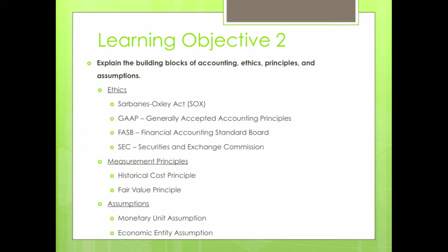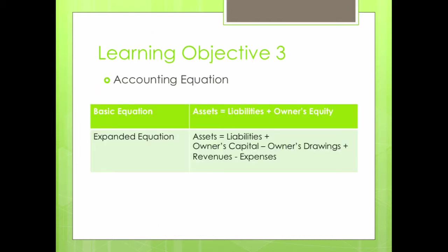The two assumptions in accounting are the monetary unit assumption, where you only record transactions that relate to money, and the economic entity assumption, where the owner separates personal transactions from the business. This is the accounting equation we will work with for the remainder of the semester. The basic accounting equation is assets equals liabilities plus owner's equity. The expanded equation is assets equals liabilities plus owner's capital minus owner's drawings plus revenues minus expenses.